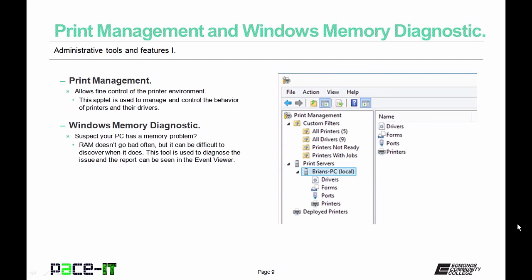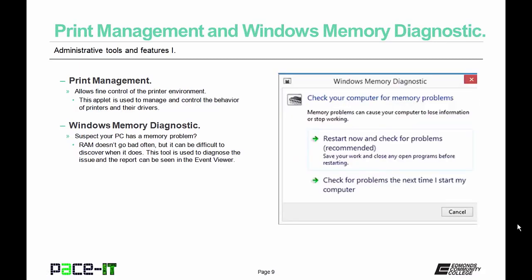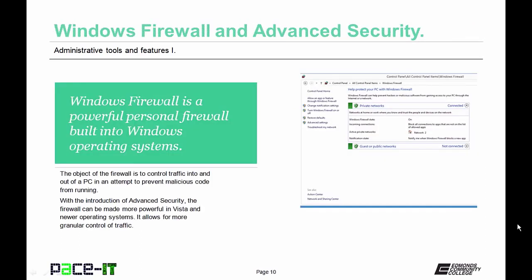Windows Memory Diagnostic is used to diagnose RAM issues — RAM doesn't go bad often, but when it does, it can be difficult to diagnose. This tool diagnoses the issue and the report can be seen in Event Viewer. Windows Firewall is a powerful personal firewall built into all Windows operating systems from XP and newer. The object of the firewall is to control traffic into and out of a PC to prevent malicious code from running. From Windows Vista onward, there's Windows Firewall with Advanced Security, making the firewall more powerful with more granular control.